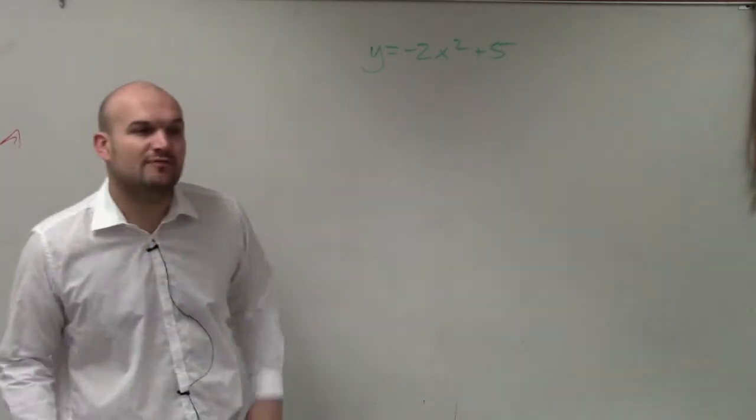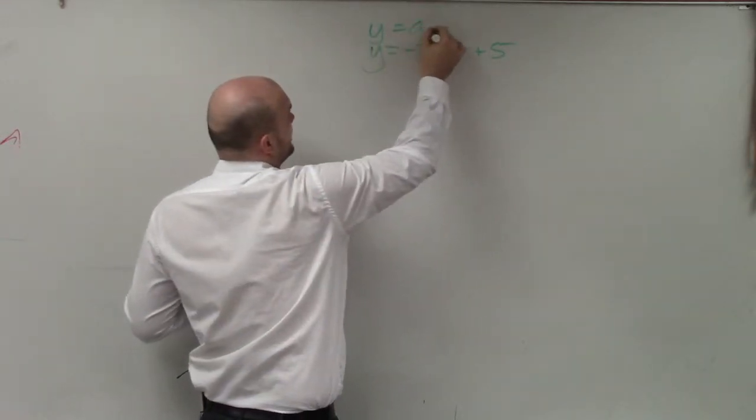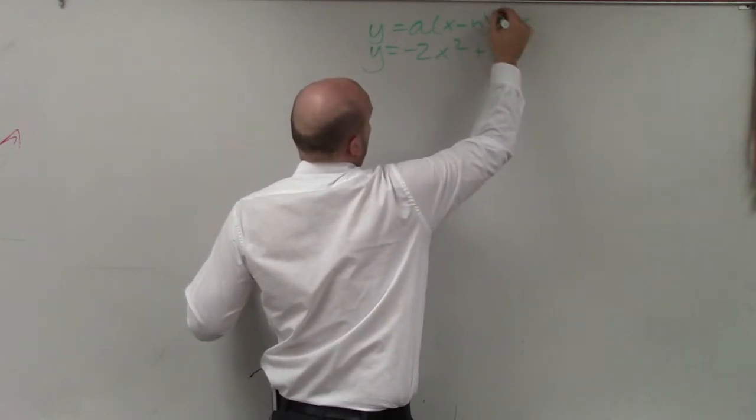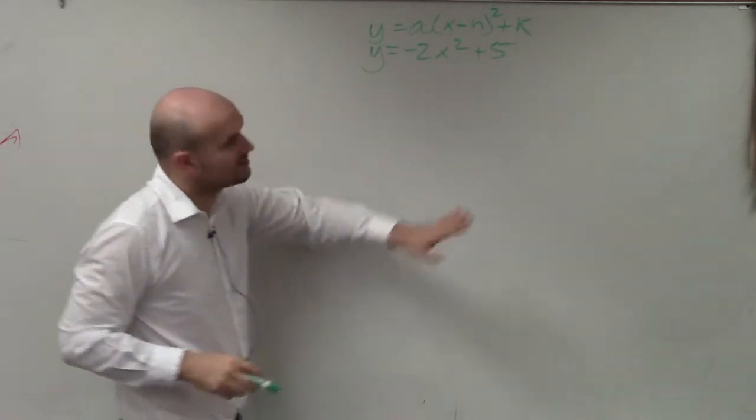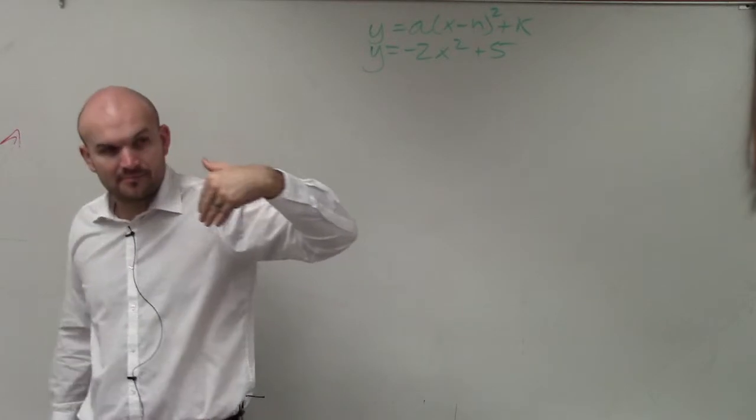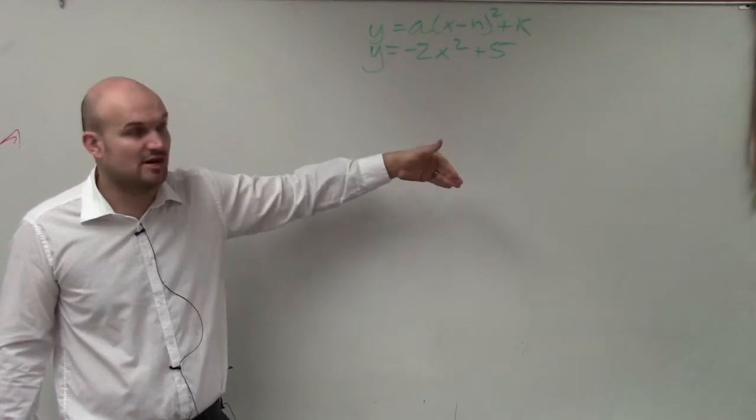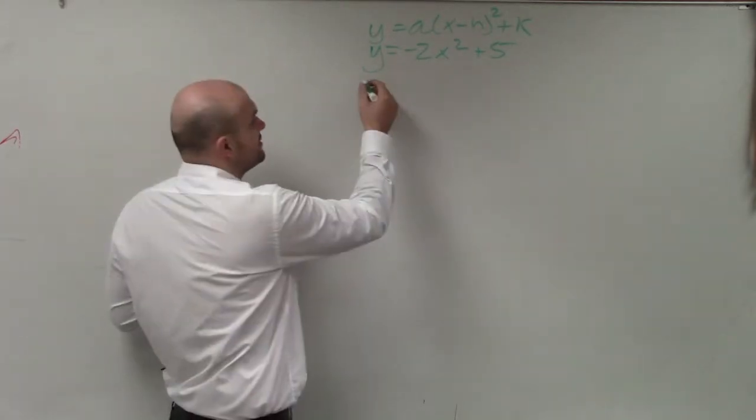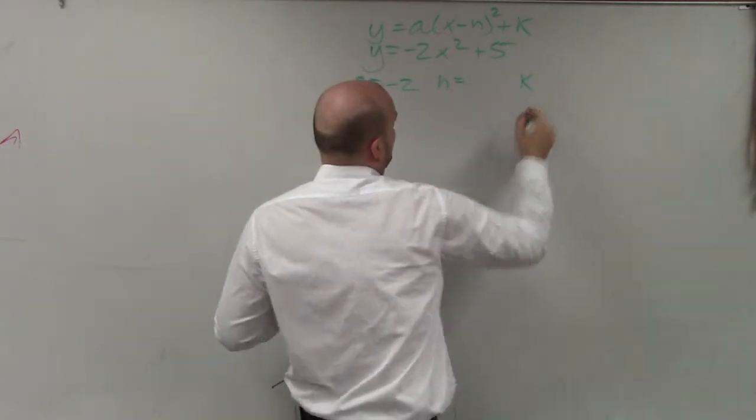So the main important thing when doing our vertex form is we need to be able to identify what are our h, our k, what is our a, our h, and our k. Now, if you're having trouble with this, one of the easiest things to do to get started is just to identify what your a, h, and k are. So in this case, my a is equal to negative 2, my h, and my k.